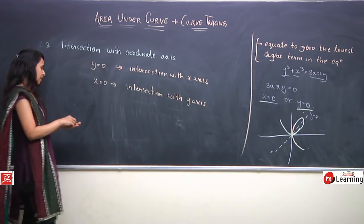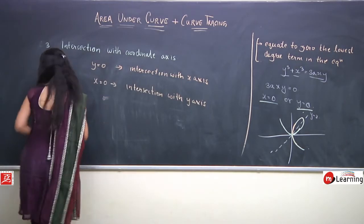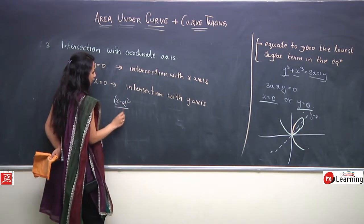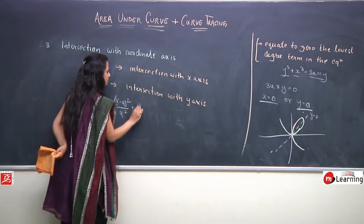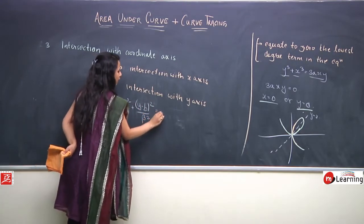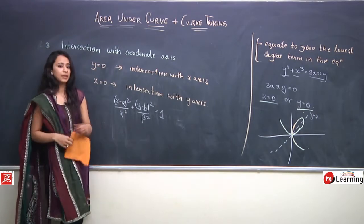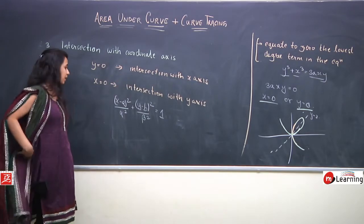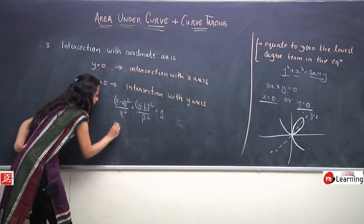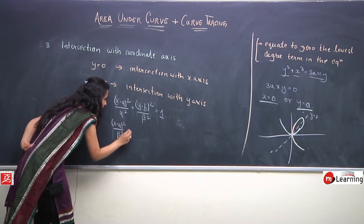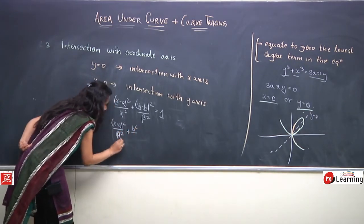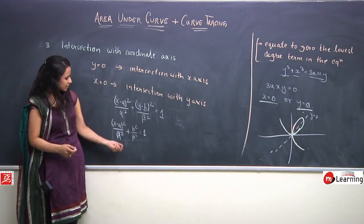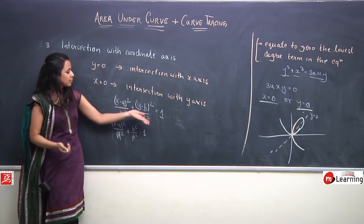For example, for the curve (x-a)²/α² + (y-b)²/β² = 1, to find intersection with the x-axis, put y = 0 to get (x-a)²/α² + b²/β² = 1. Solving this gives the intersection points with the x-axis. Similarly, put x = 0 to find intersection with the y-axis.